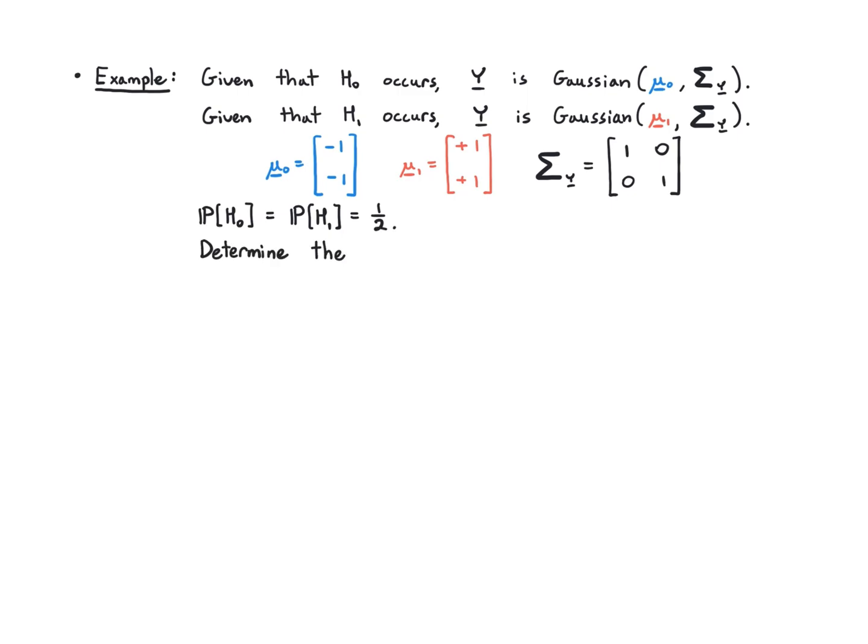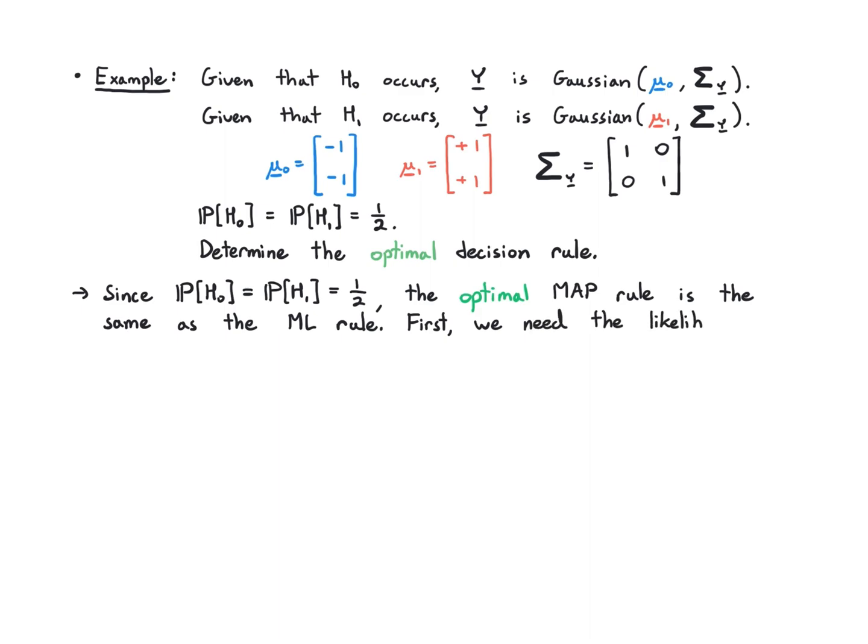So what is the optimal decision rule? On the previous slide we said that since the hypothesis probabilities are the same, it doesn't really matter whether we use the MAP rule or the ML rule, they're both going to do the same thing. The MAP rule obviously is optimal, but since the hypothesis probabilities are the same we could just work out the ML rule which is usually a little bit easier. So we're going to start out by working out the likelihood ratio. To do that I'm going to explicitly work out the conditional pdfs in each case on this slide.